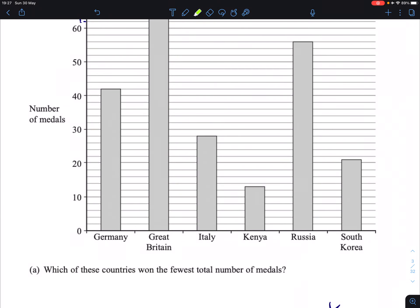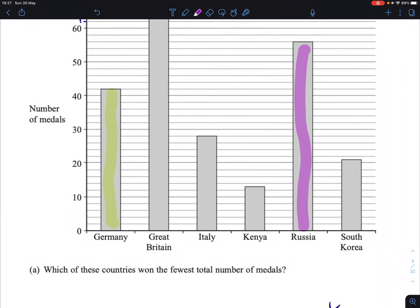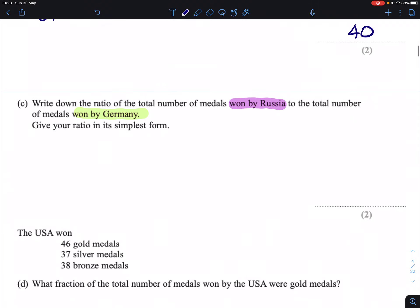Russia being this bar, Germany first of all being this bar here, and Russia being this bar here. We want to know what their number of medals are. This is 56 and this is 42. So Russia is 56, Germany is 42.